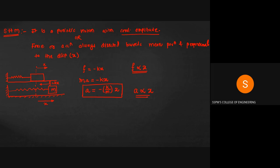The negative sign in the acceleration equation means acceleration and force are always directed towards the mean position in SHM. The value K/m can be written as ω², or ω equals √(K/m). This is called the frequency of oscillation, with units of radians per second. So we can write acceleration equals minus ω²x. This is the formula for acceleration in simple harmonic motion.